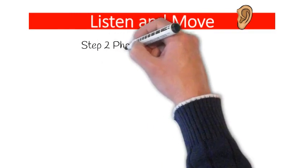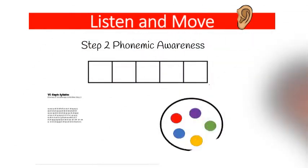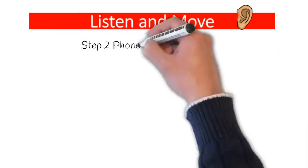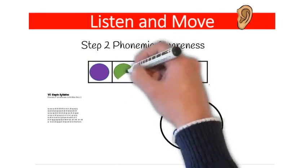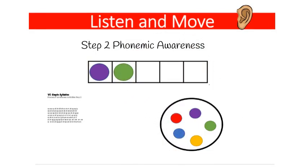Next up is Phonemic Awareness. Phonemic Awareness is teaching students about the sounds in words and how they work together. In this step, you'll have some Phonemic Awareness lists to use. You will give your student markers for this step. In this picture, I've said 'app' and the student moved up two markers, one for each sound in the word.